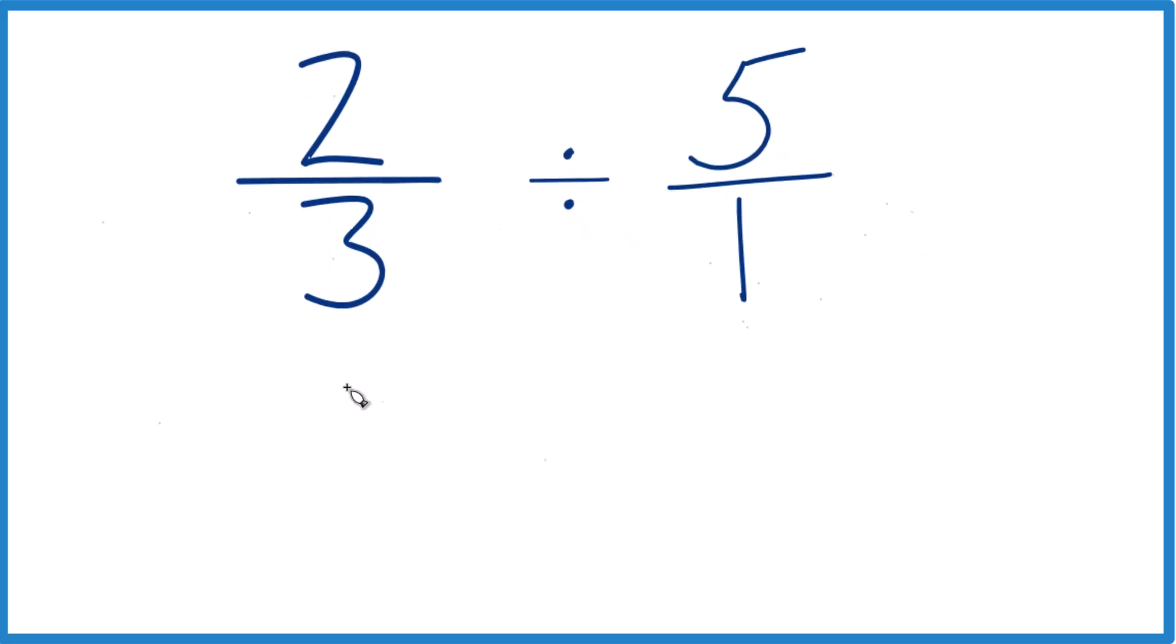Then we take 2/3, and instead of division, we multiply by the reciprocal of 5/1. The denominator goes to the top, numerator goes to the bottom, so we have 1/5. 1/5, that's just one fifth.